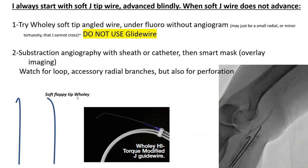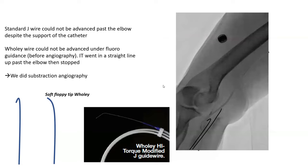High risk of perforation. So I try woolly blindly. If it does not go, then at this point I will do subtraction angiography through the sheath or the catheter, with a smart mask. And I watch for loops, accessory radial branches, but also for perforation that I may have induced. And I will start with a case to illustrate the steps I follow.